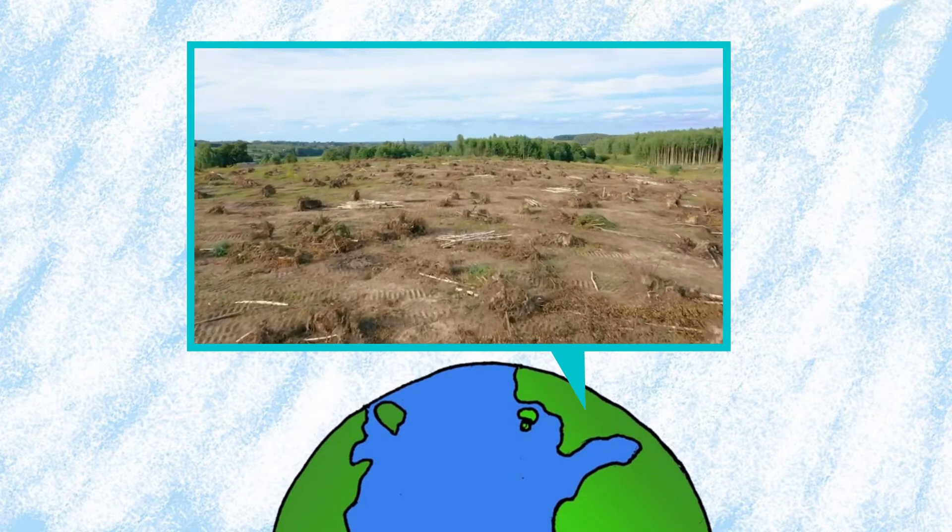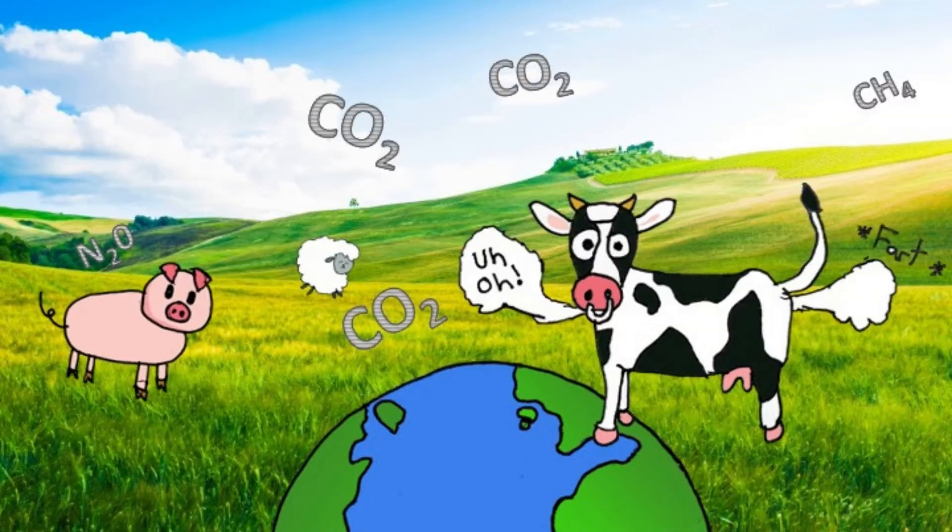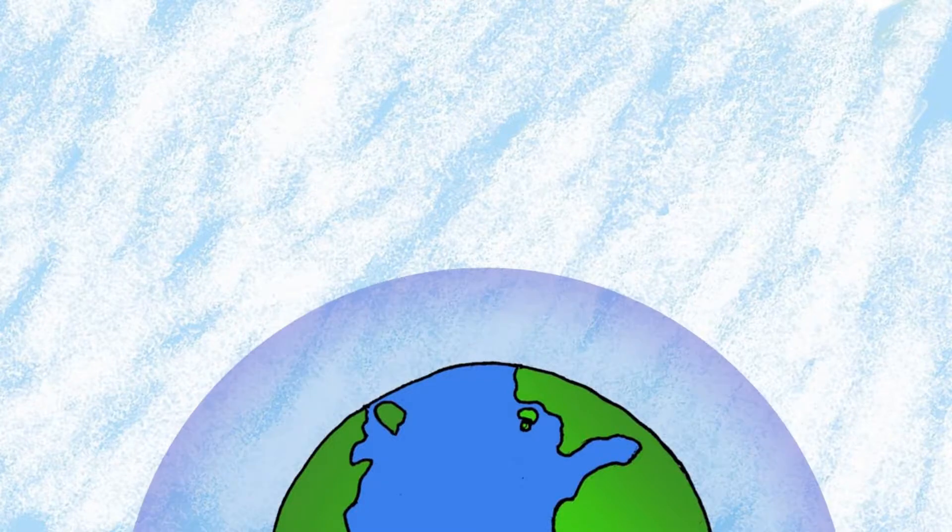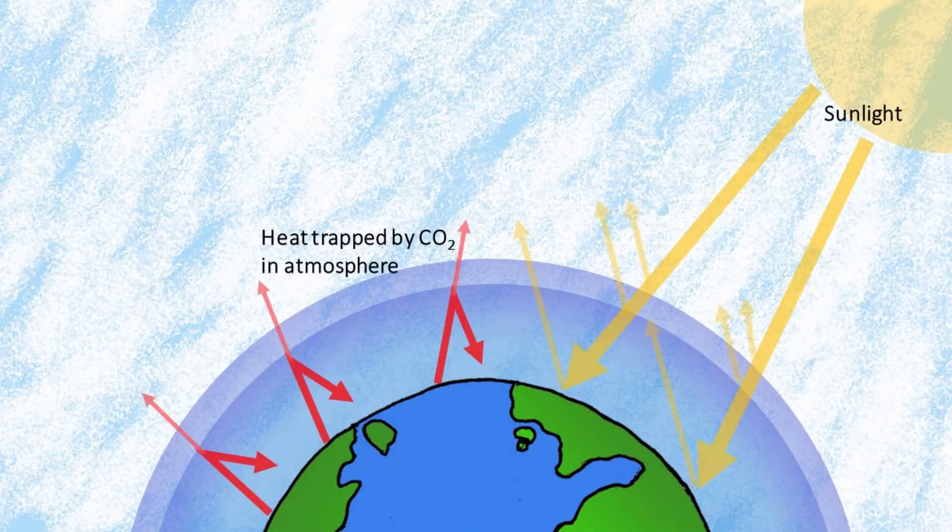The land we cleared for growing food produced great amounts of CO2. The gas formed a blanket up high and trapped heat in our ocean and sky.